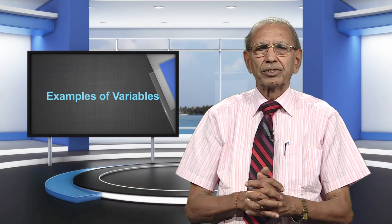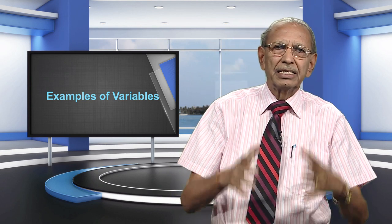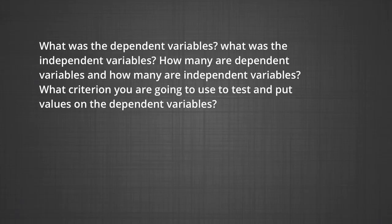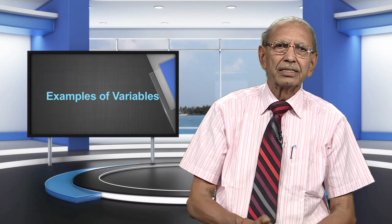In this way, I have tried to tell you about the types of variables that we have in research. You should be very careful while selecting and designing your research and experiments. You must try to identify what the dependent variable is, what the independent variable is, how many independent and dependent variables there are, and what criterion you are going to use to test and put values on the dependent variable. It would be good to be very careful and cautious in your work. Thank you very much.